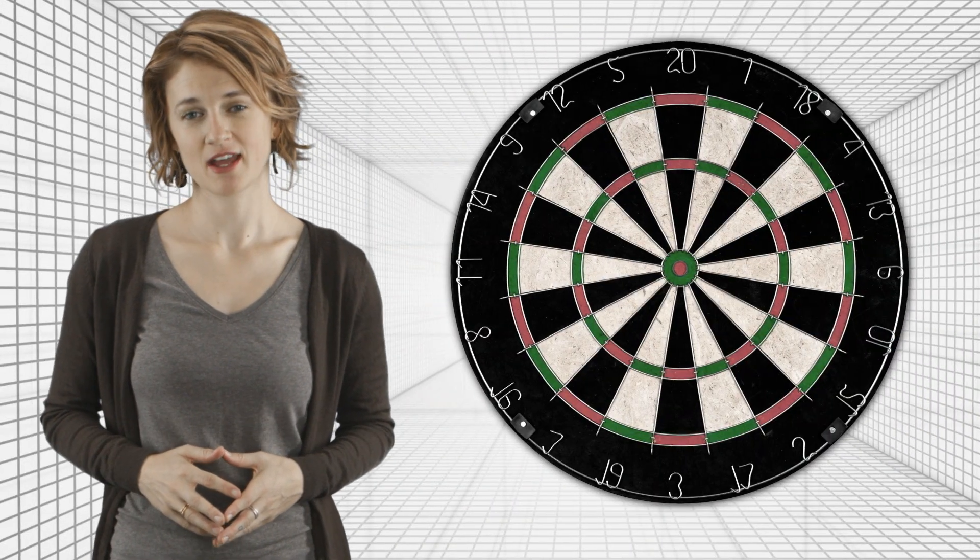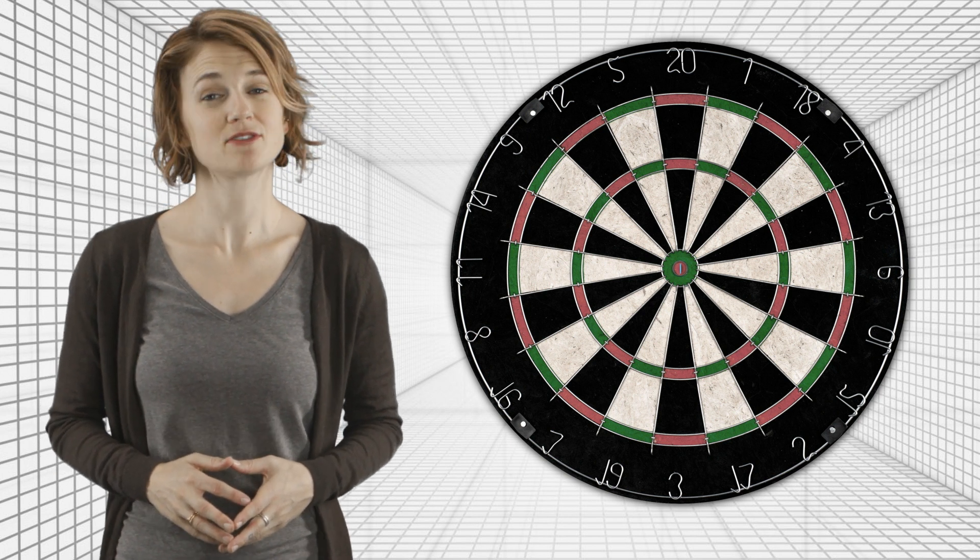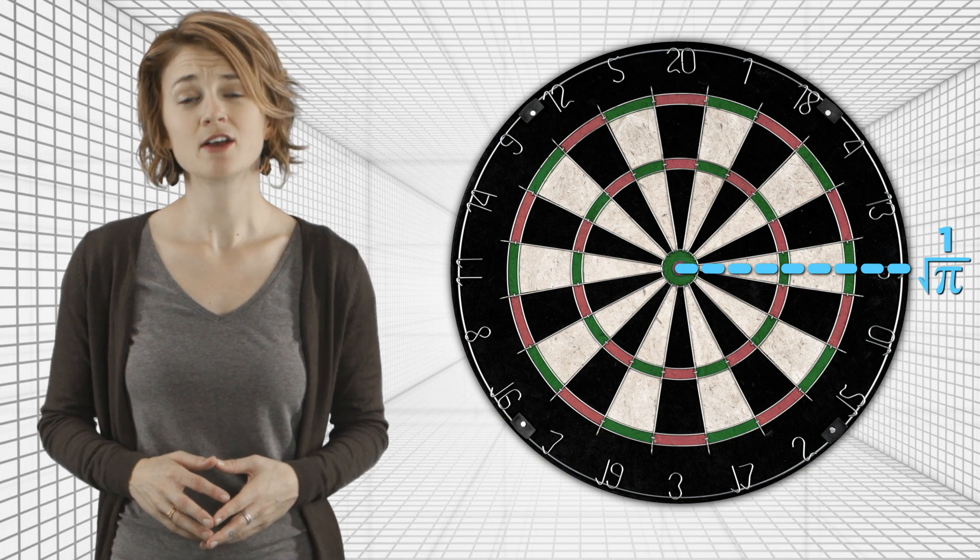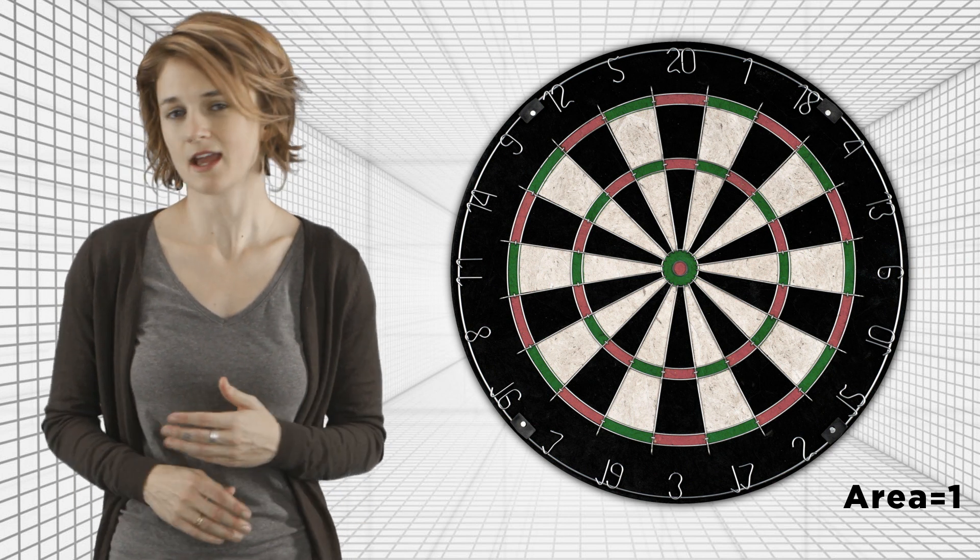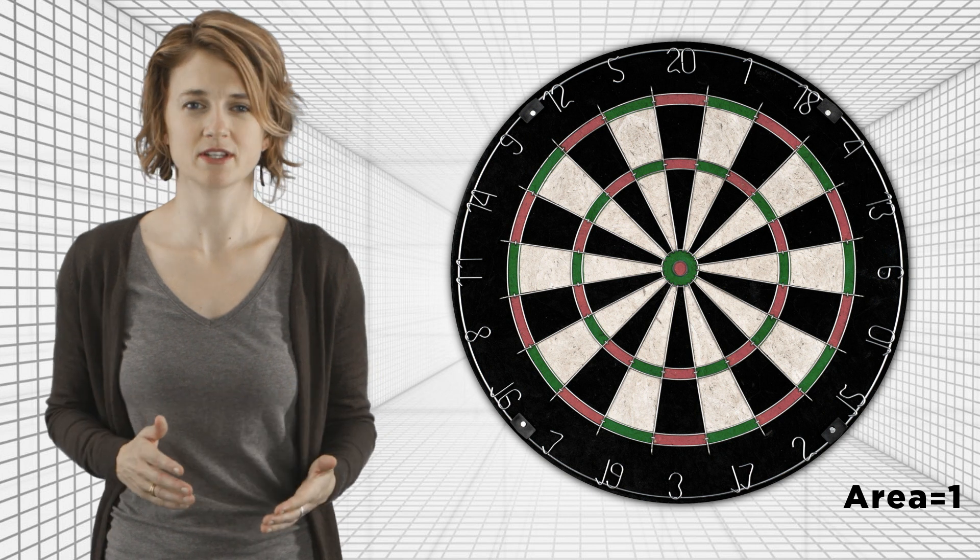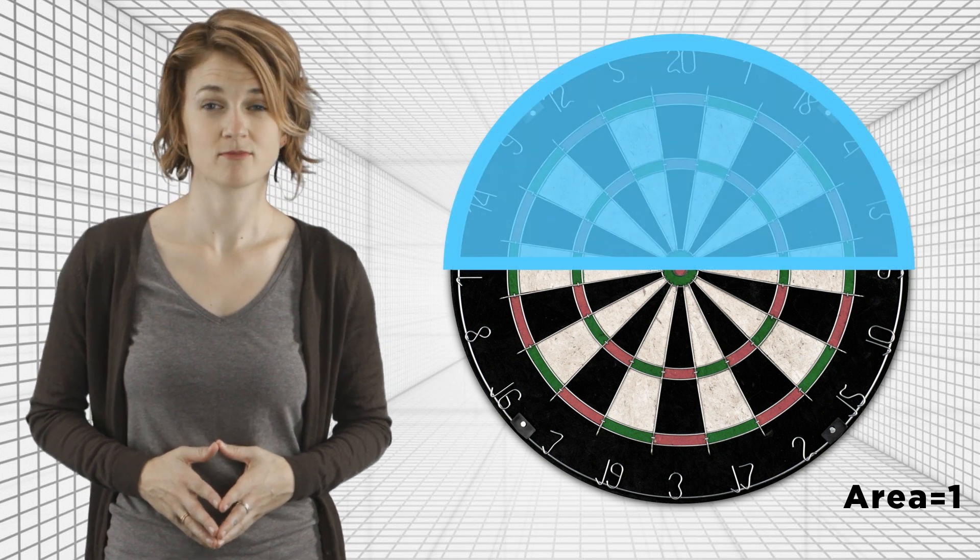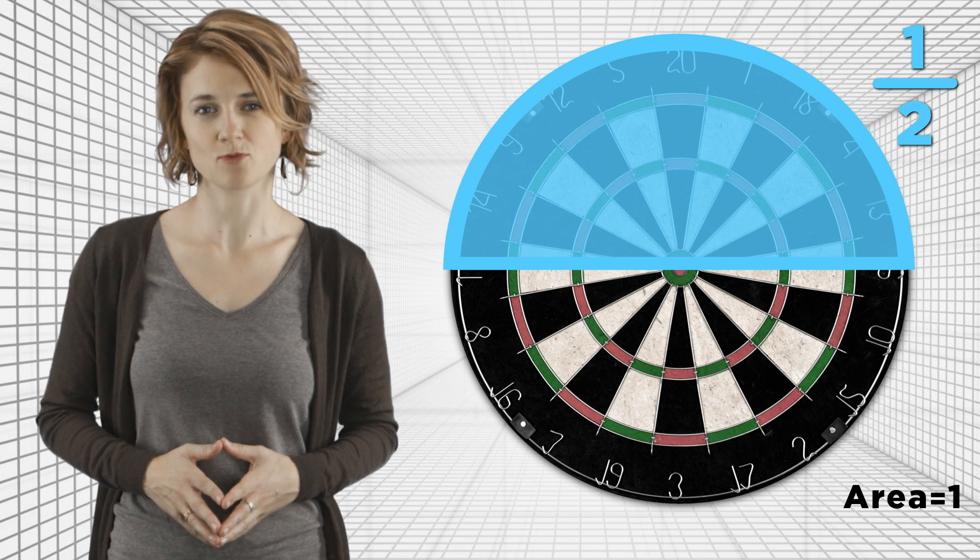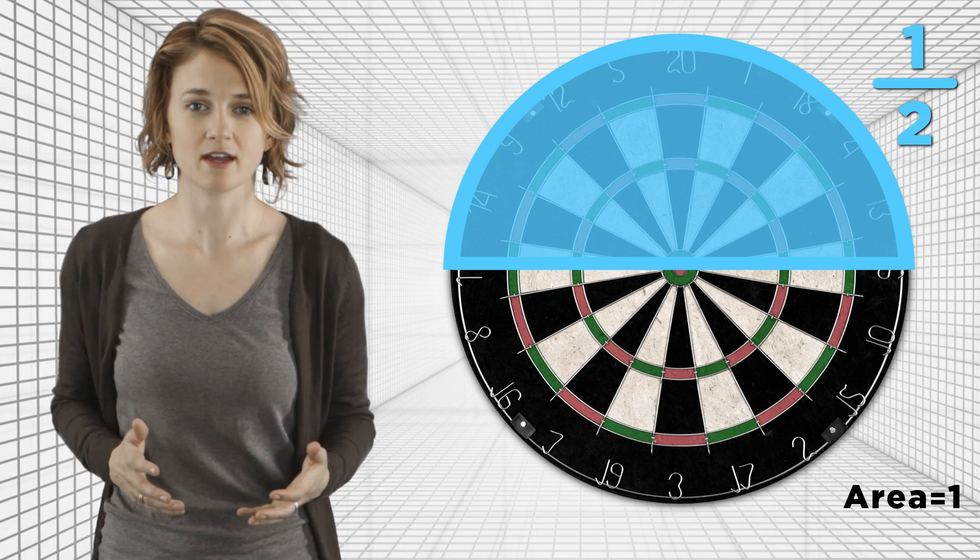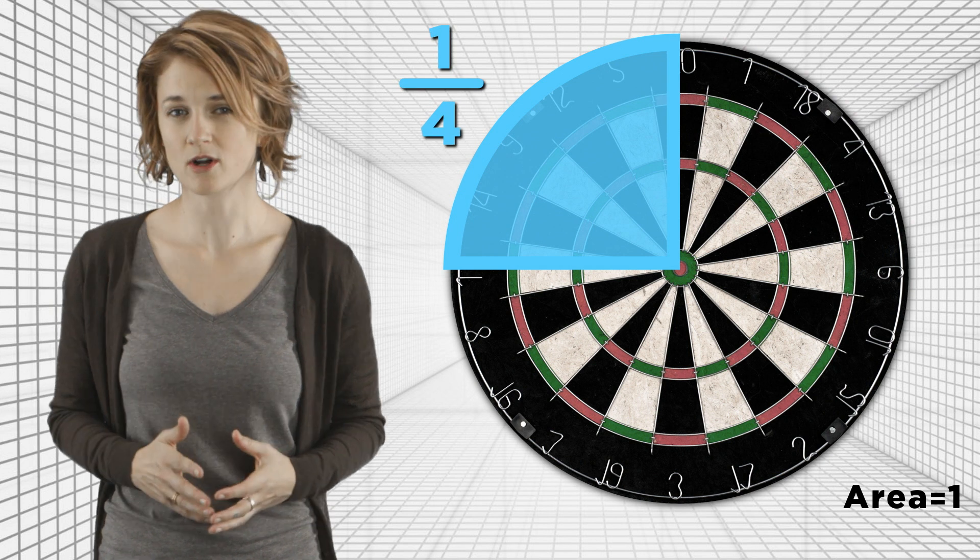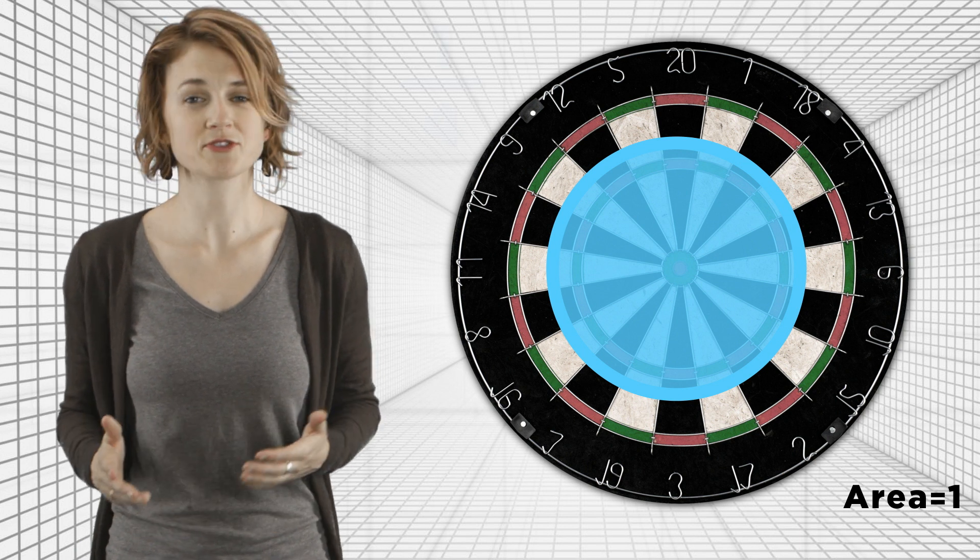You're throwing a dart at this dartboard. And your dart is infinitesimally small, meaning it hits at exactly a point. For mathematical convenience, we've made the radius of the dartboard 1 over the square root of pi, so that the area is 1. For now, let's pretend you're really bad at darts, and the dart is equally likely to land anywhere on the board. You're basically throwing blindfolded, and we only count the darts that actually land on the board. What's the probability you hit this section of the dartboard? 1 half. Why? The area of the entire dartboard is 1, and the area of this section is 1 half. The probability is the fraction of the total area. What's the probability you hit this section? 1 quarter. What about this section? It's still just the fraction of the total area, which in this case is also 1 quarter.